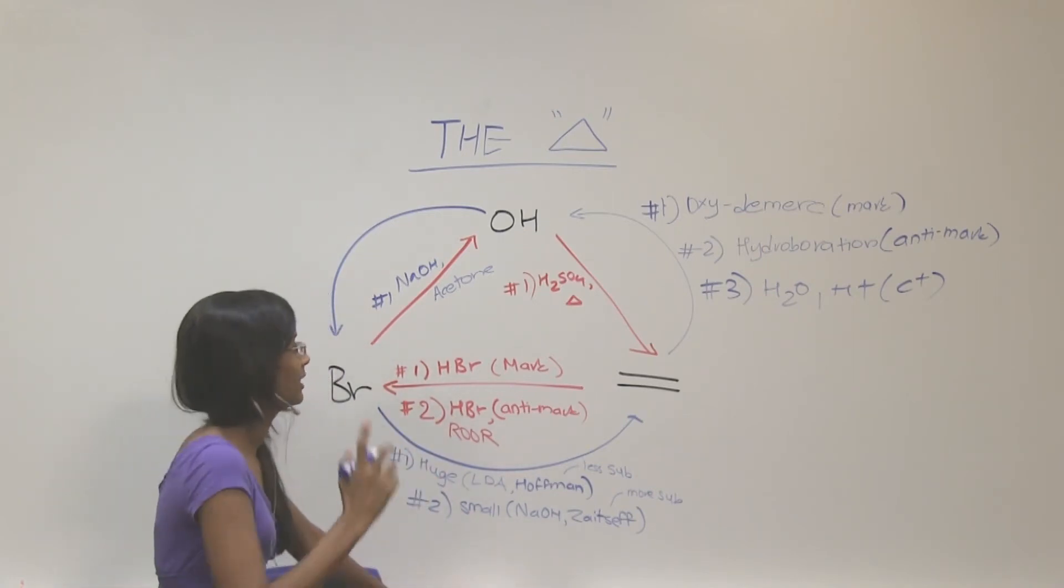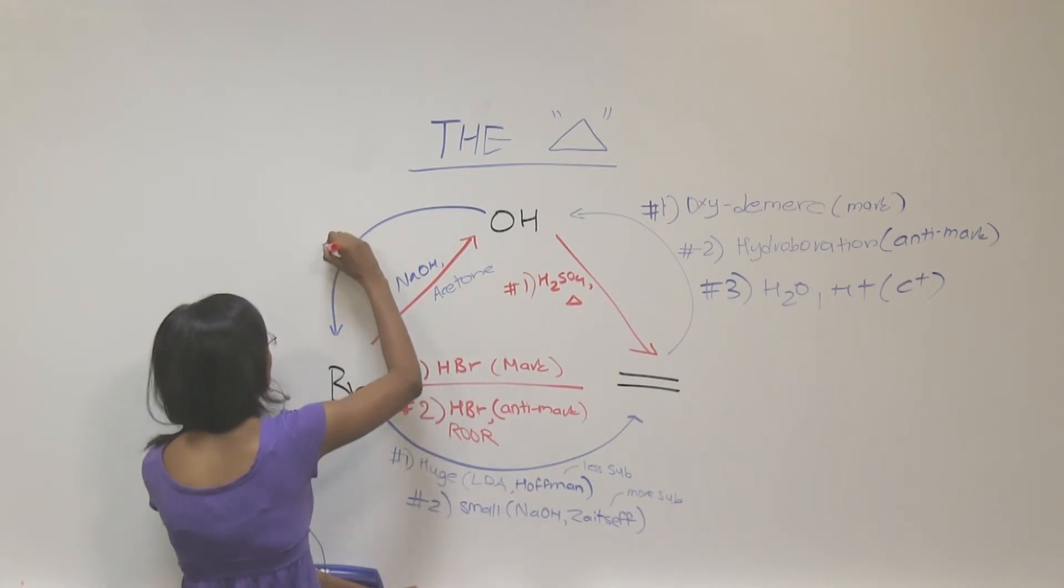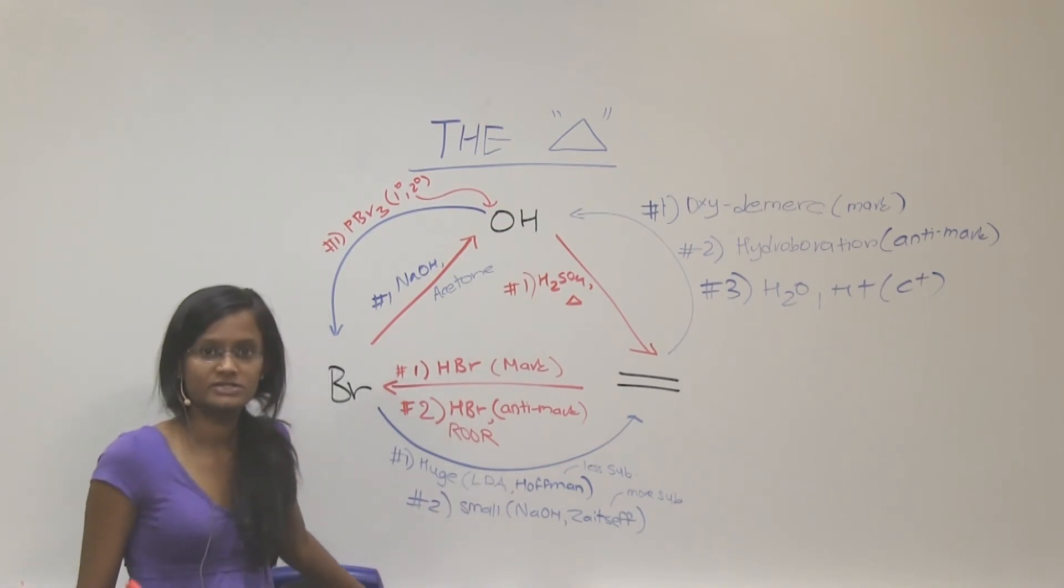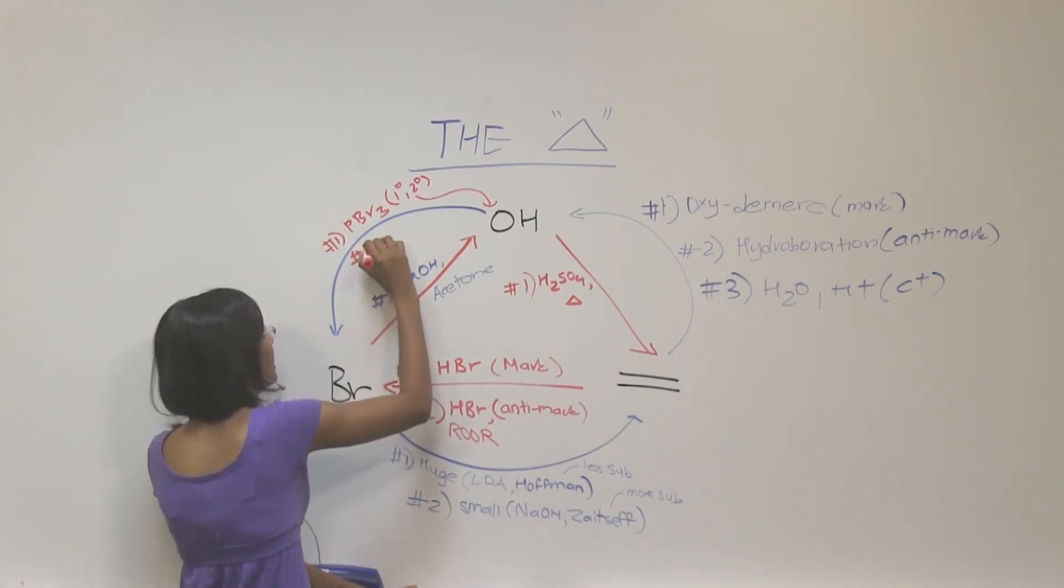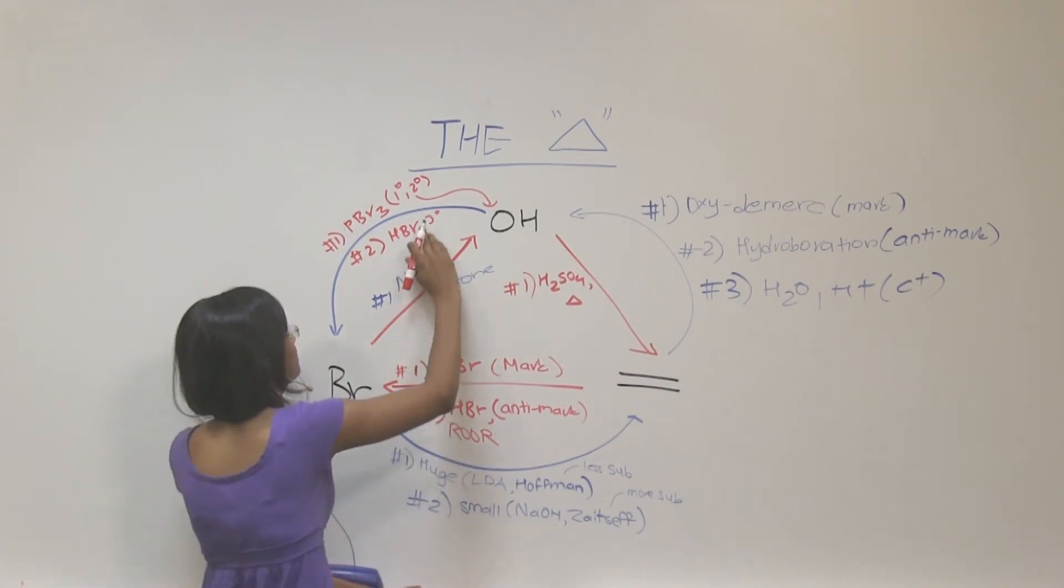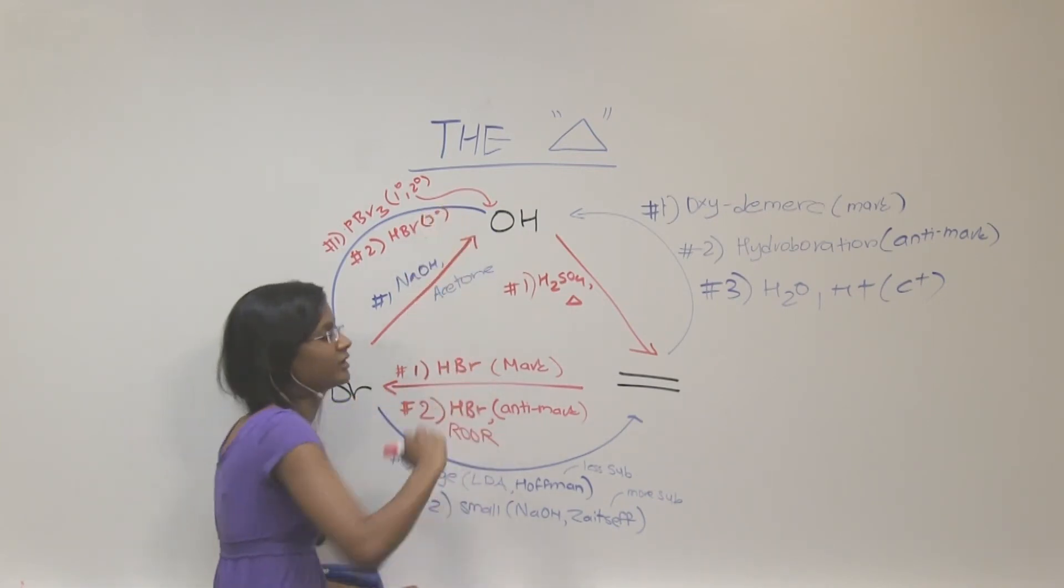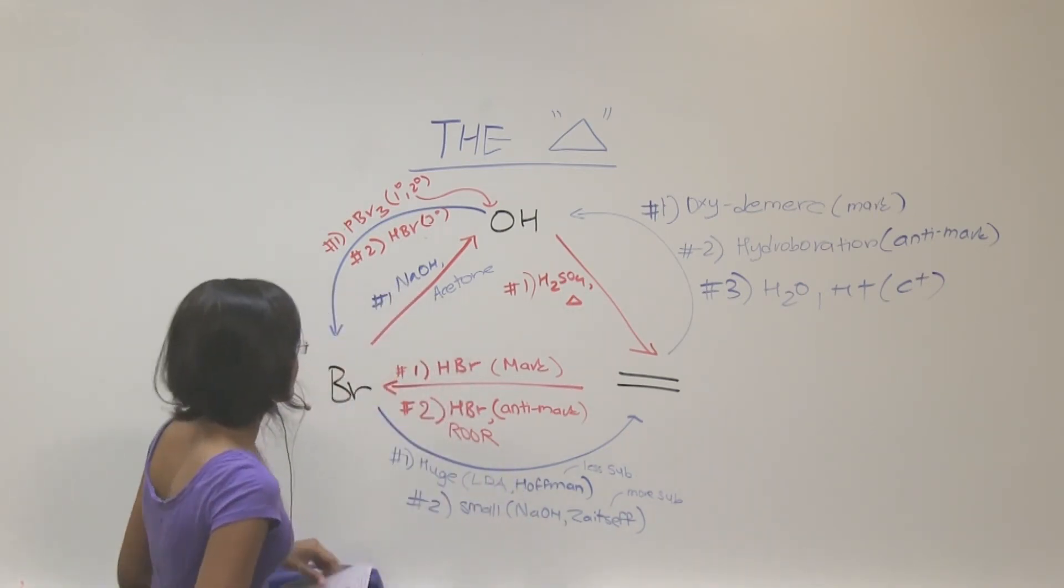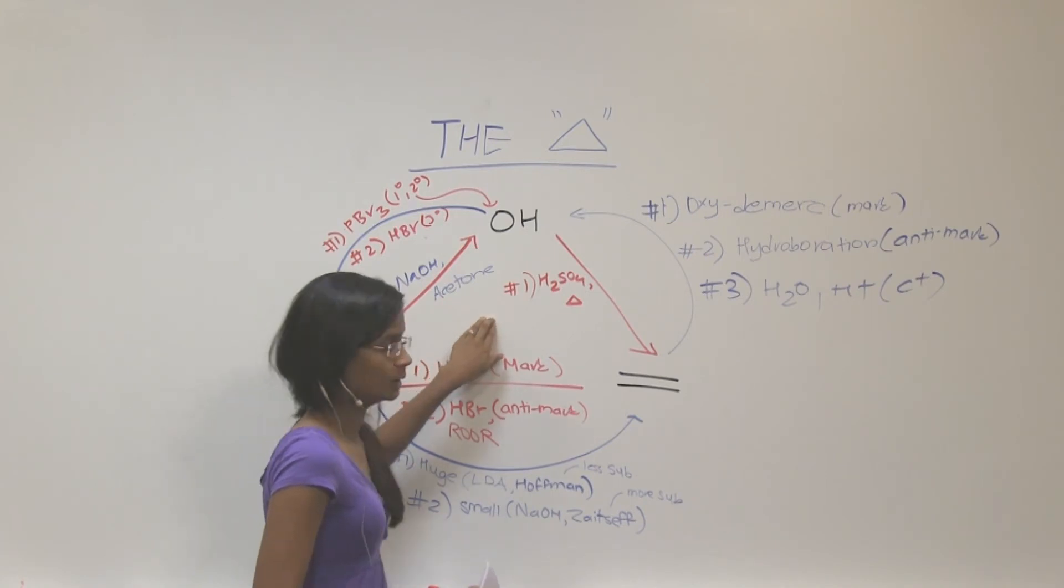But how do we go back? To go back from alcohol to bromine, you have number one way is PBr3, which is for primary and secondary alcohols. That's one of the ways. But if you have a tertiary alcohol, then you're going to have to use HBr to do the job. So depending upon what kind of alcohol you're working with, that will decide what kind of reagents you're going to be using.